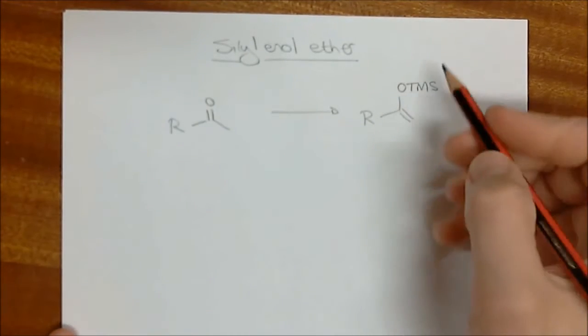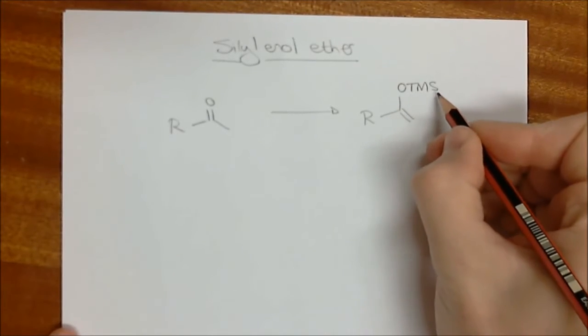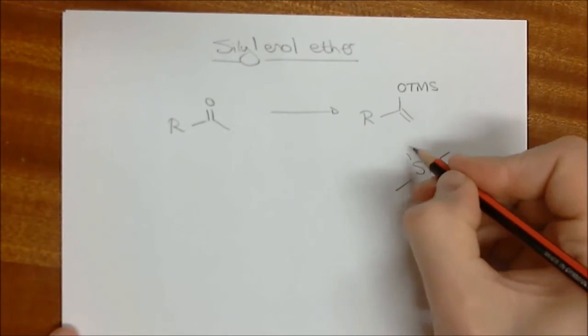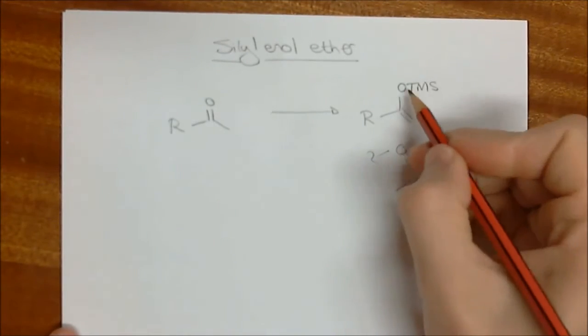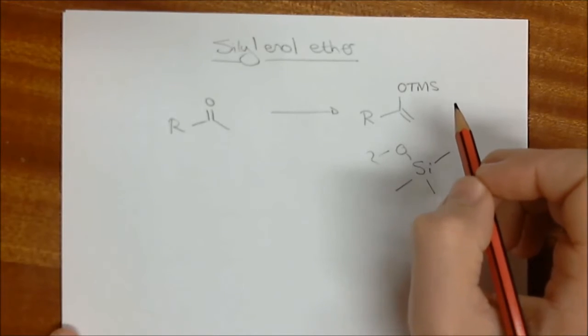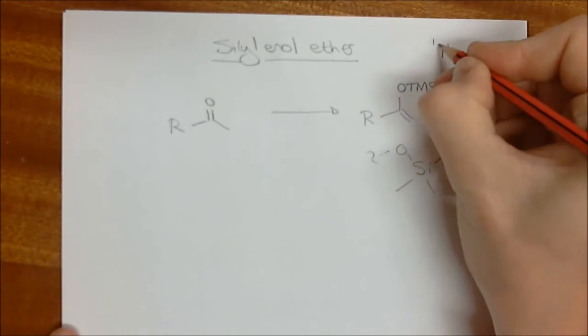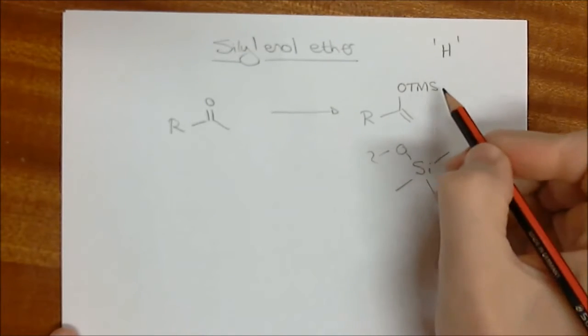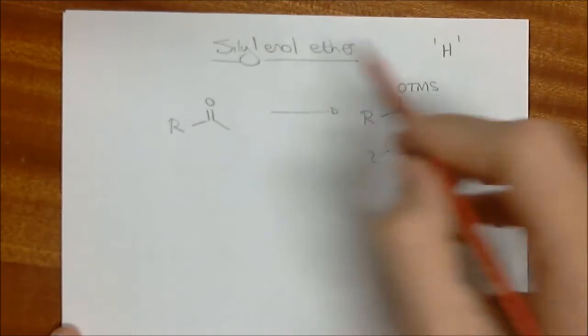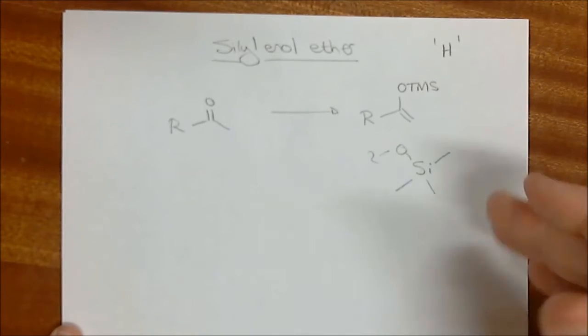The second stable enolate equivalent is the silyl enol ether. TMS stands for trimethyl silyl. It's a silicon with three methyl groups bonded to it, and of course, it's then going to the oxygen. The TMS group is a very important silyl group in organic chemistry, and for all intents and purposes, it can be very helpful to think about the TMS group as being a very large H atom. You'll see in a lot of chemistry of trimethyl silyl groups, by thinking about the TMS group as being like a large H will actually make the chemistry surrounding this particular functional group a lot easier to understand, and you'll see the reactivity is very similar.